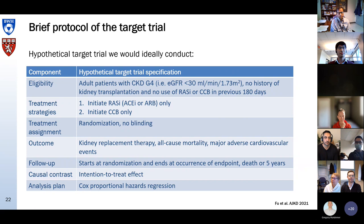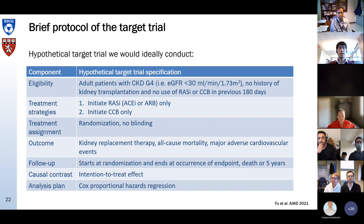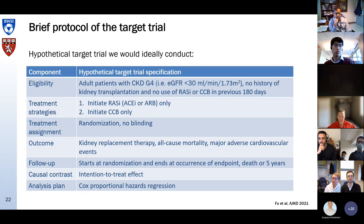This is what a protocol could look like. We would include adult patients with CKD G4, so an eGFR below 30, no history of kidney transplantation, and no use of either drug under investigation in the previous six months. We would compare starting RAS inhibitors only versus starting calcium channel blockers only, randomly assign patients to both arms in a pragmatic trial with no blinding. We would assess three outcomes: kidney replacement therapy, all-cause death, and major adverse cardiovascular events. Follow-up would start at randomization and end at the occurrence of an endpoint, death, or five years — whichever occurs first. We would estimate intention-to-treat effects using Cox proportional hazard regression.